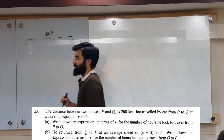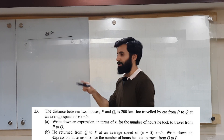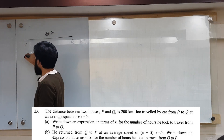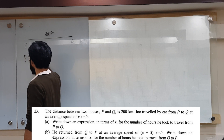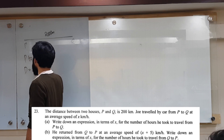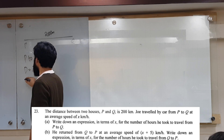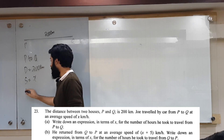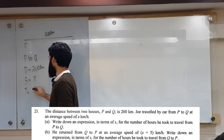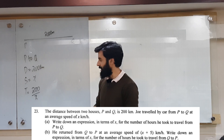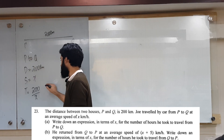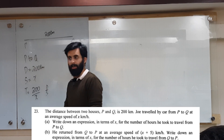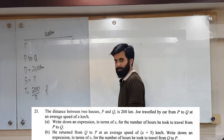Joe is traveling from P to Q and then back. When he's traveling from P to Q, the distance is 200. The speed at which he's traveling is x. The time that he's going to take will be 200 upon x, because time equals distance over speed. Distance is 200, speed is x, so 200 upon x.